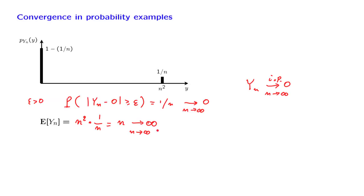So we have a situation where the random variable, the sequence of the random variables converges to zero, but the expectation does not converge to zero. In fact, it goes to infinity. And this example serves to make the point that convergence in probability does not imply convergence of expectations.